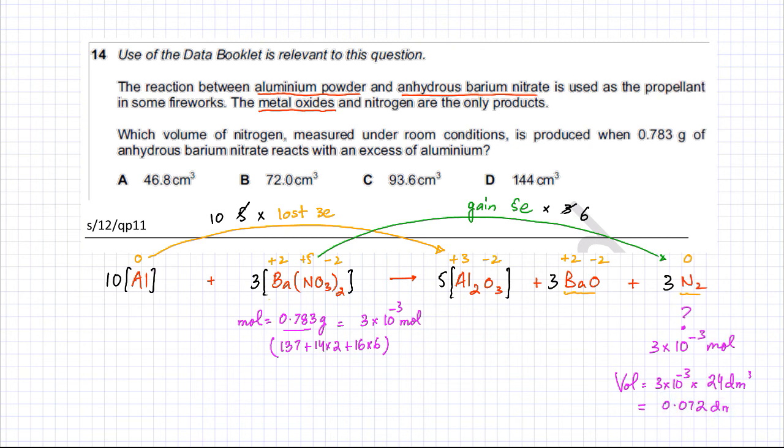Converting to cm³ by multiplying by 1000 gives 72 cm³, and option B would be the correct answer.